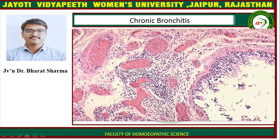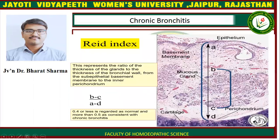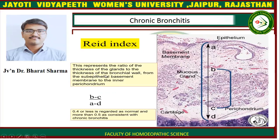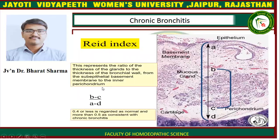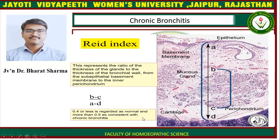The Reid index represents the ratio of the thickness of the glands to the thickness of the bronchial wall, from the sub-epithelial basement membrane to the inner perichondrium. A value of 0.4 or less is regarded as normal, and more than 0.5 is consistent with chronic bronchitis.